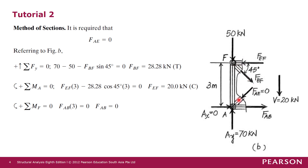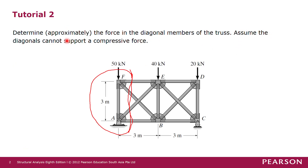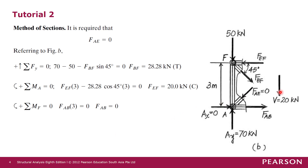As stated in the problem, we assume that diagonals cannot support a compressive force. If at any time a diagonal member force is in compression, we set that force to zero — the member cannot support compression and is therefore a zero force member. By inspection, FAE would need to slant downward to contribute a downward vertical component, which means FAE is in compression. Therefore, FAE is set equal to zero.